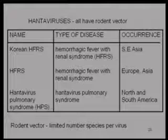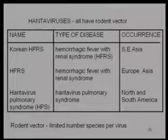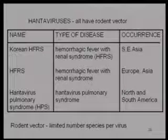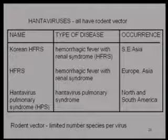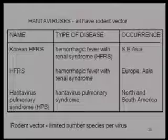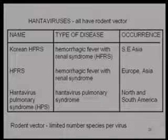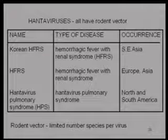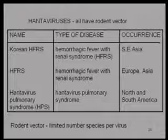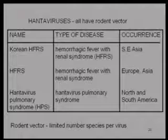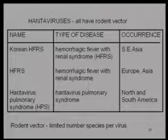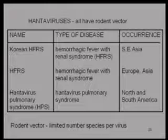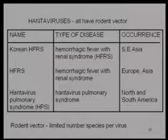The hantaviruses all have a rodent vector. They were typically associated with hemorrhagic fevers, but these patients also tend to get a renal syndrome — hemorrhagic fever with renal syndrome (HFRS). One of the more serious ones with a higher case fatality rate is Korean hemorrhagic fever, occurring in Southeast Asia. From the American point of view, this was a particularly serious problem during the Vietnam War, because many troops went down with Korean hemorrhagic fever. It's widespread throughout Southeast Asia.